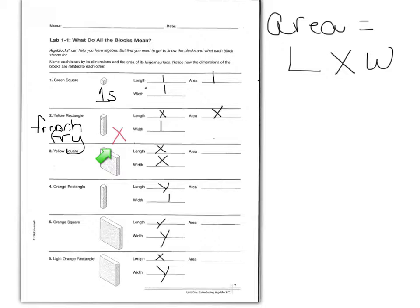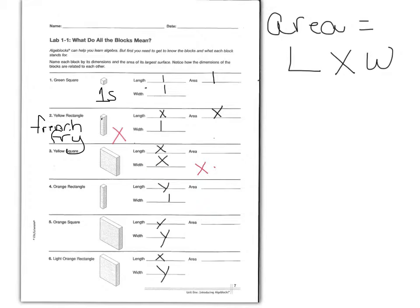Now get out the yellow square. The yellow square has a length that matches french fry and a width that also matches french fry. So it has a length of x and a width of x. To find the area, we do x times x, which is x to the second power, or x squared. So our yellow square will always now be called x squared.